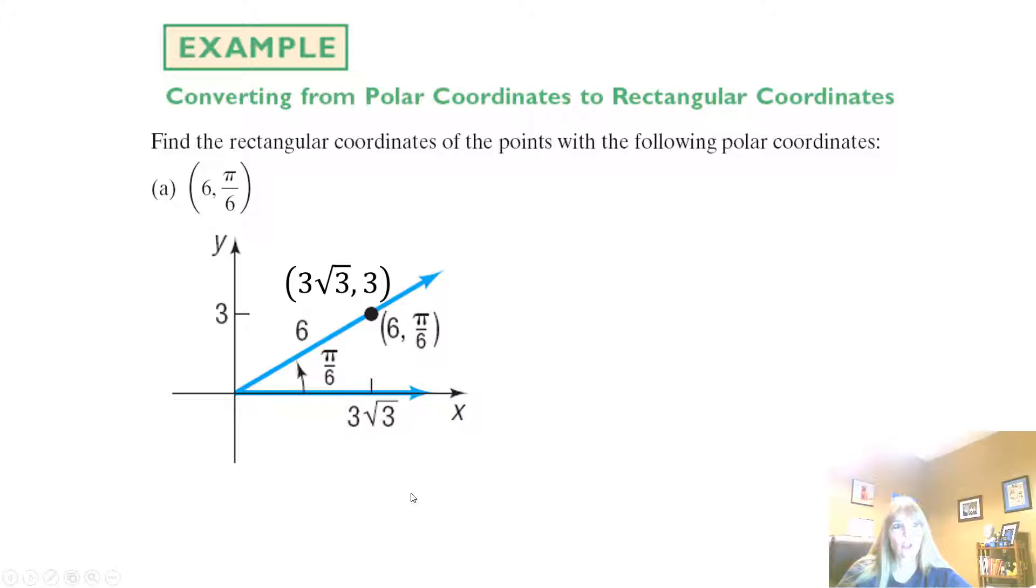And of course, you should graph it. So in other words, as we can see, if I graph my polar coordinates, I go pi over 6, I go out a distance of 6. And then I say, well, I can actually say that's the same point in the rectangular coordinate system as 3 square root of 3 comma 3. All right?